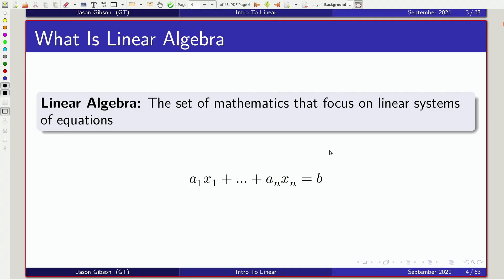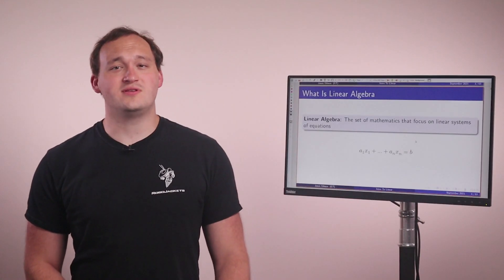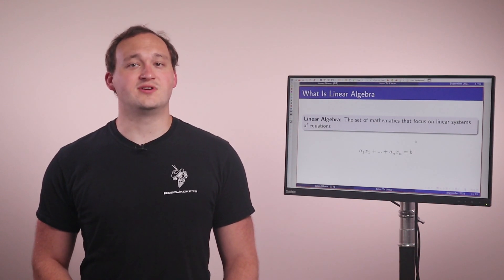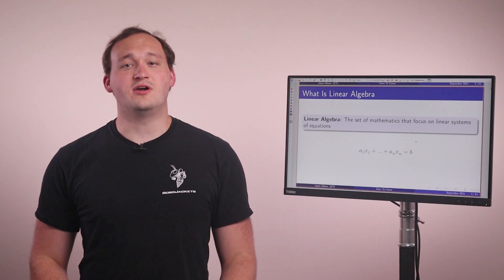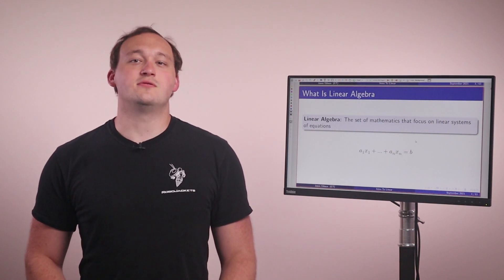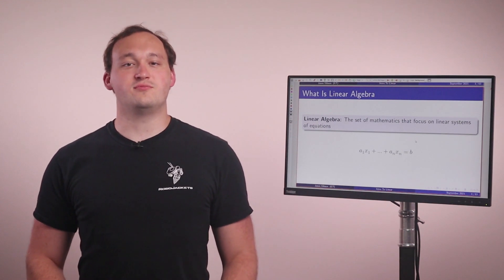Linear algebra is the set of mathematics that focuses on linear systems of equations. In short, that means we're looking at a set of equations like we see in this slide. Here we have a set of variables known by x and we multiply them by some constants a. The math you are familiar with is great for single variables or for a couple variables, but often in robotics we're talking about systems with a large number of variables. There could be hundreds or even thousands of possible values. Linear algebra allows us to write equations that take into account all the variables at once.